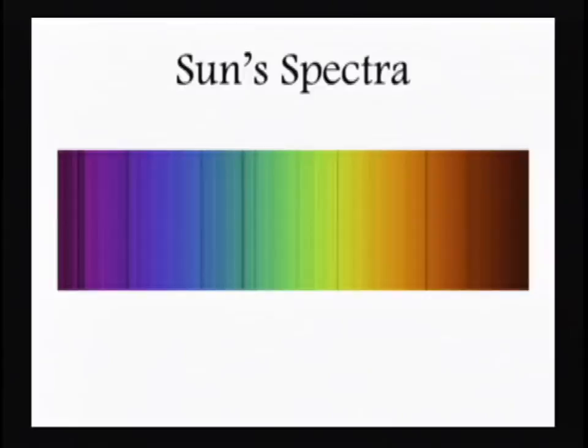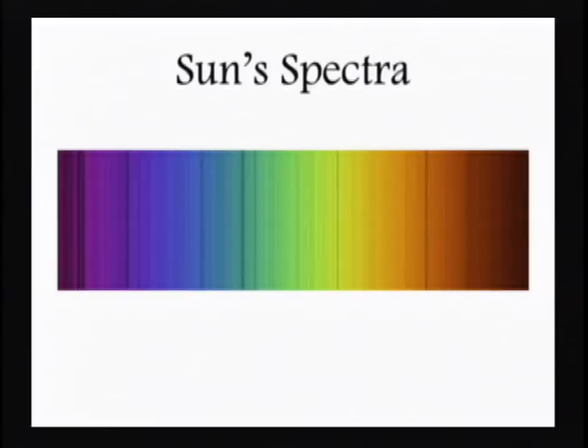That's a sun spectrum — you've got a nice continuous spectrum of red, orange, yellow, green, blue, and violet, with an absorption spectrum on top of it. The very distinct patterns within that absorption spectrum tell us what chemicals are in the outer envelopes of the sun. We can't tell anything below the photosphere because we can't see into the interior; we have to use other methods for that.